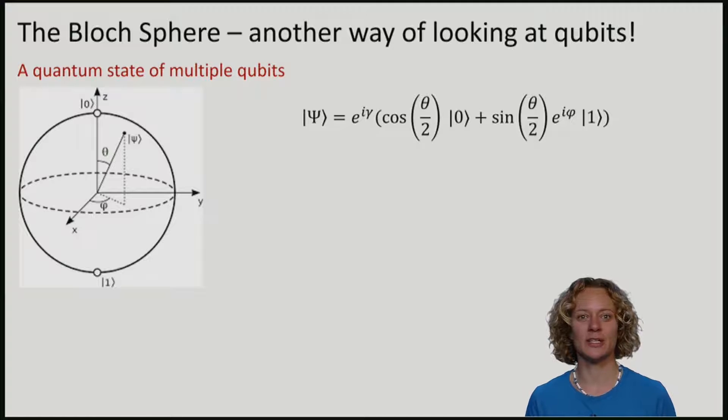Sometimes it is useful to use a different representation to write qubits. This is known as the Bloch sphere representation.